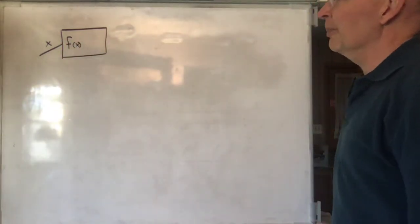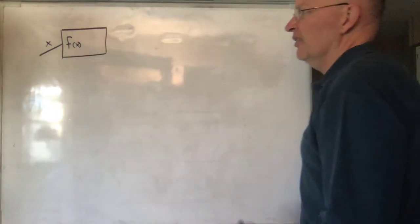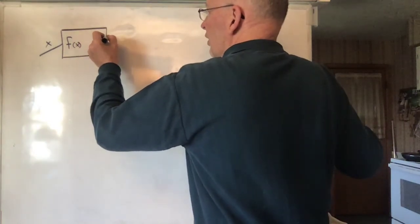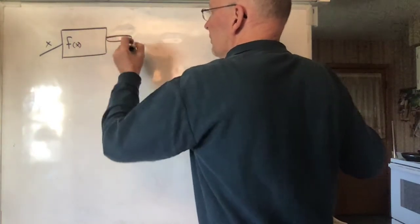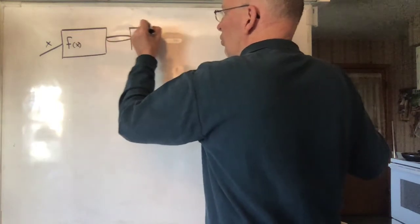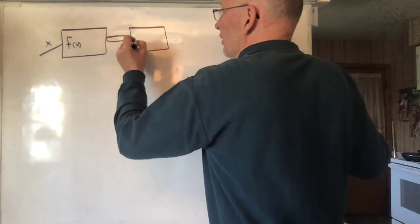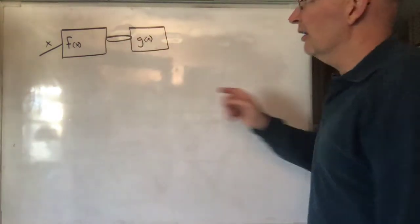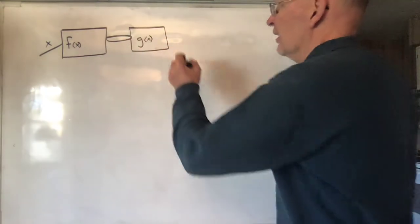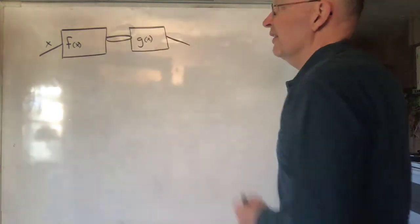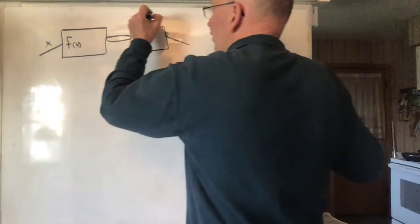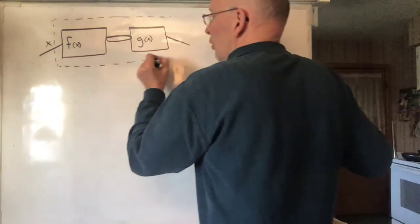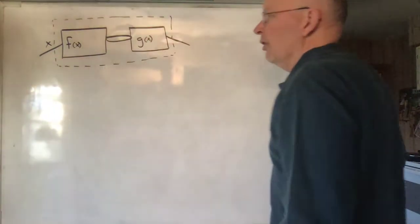Now we're going to allow this as a possibility. This thing that comes out of F — before we look at it — we're going to put it on a conveyor belt and it's going to go to another function, we'll call it G. It'll go into G and come out of G, and that's what we'll finally see. We can think of this as being one big function made up of these two smaller ones.